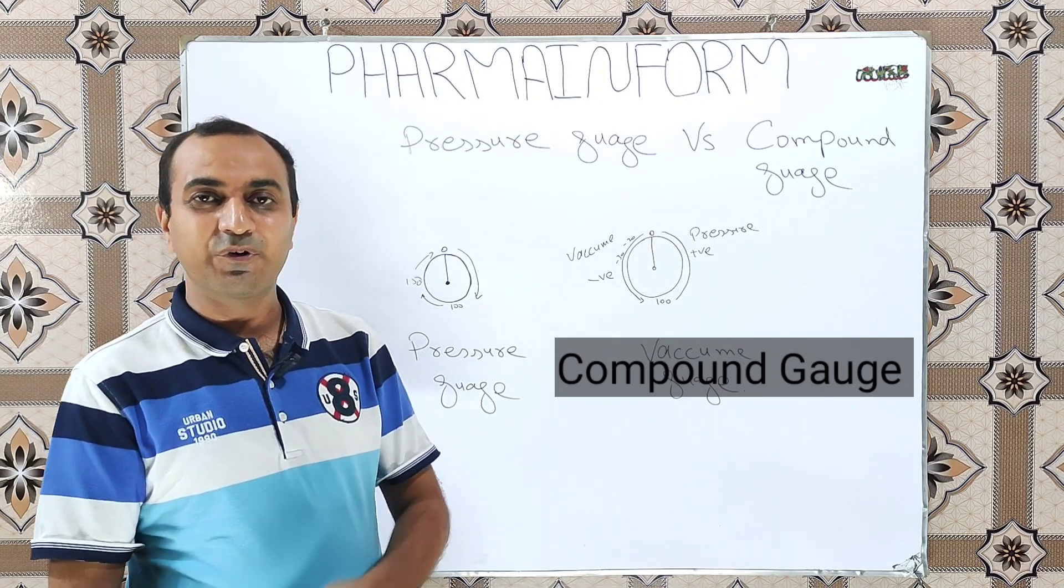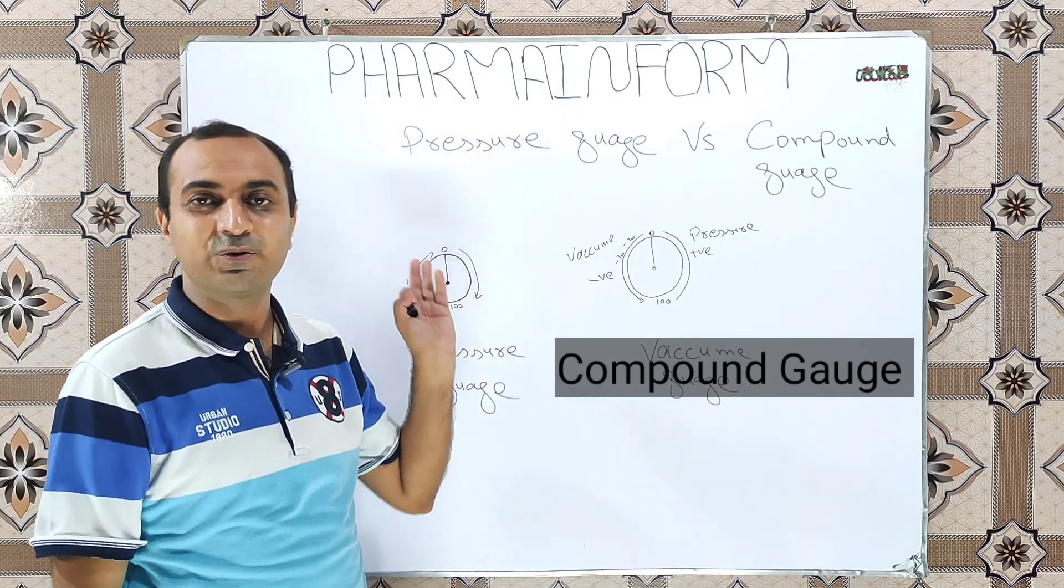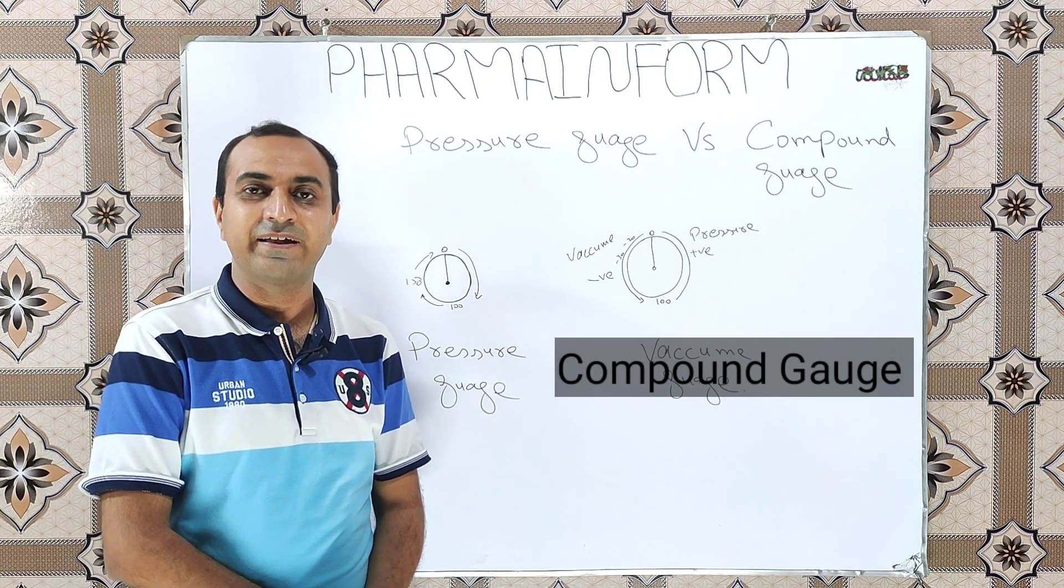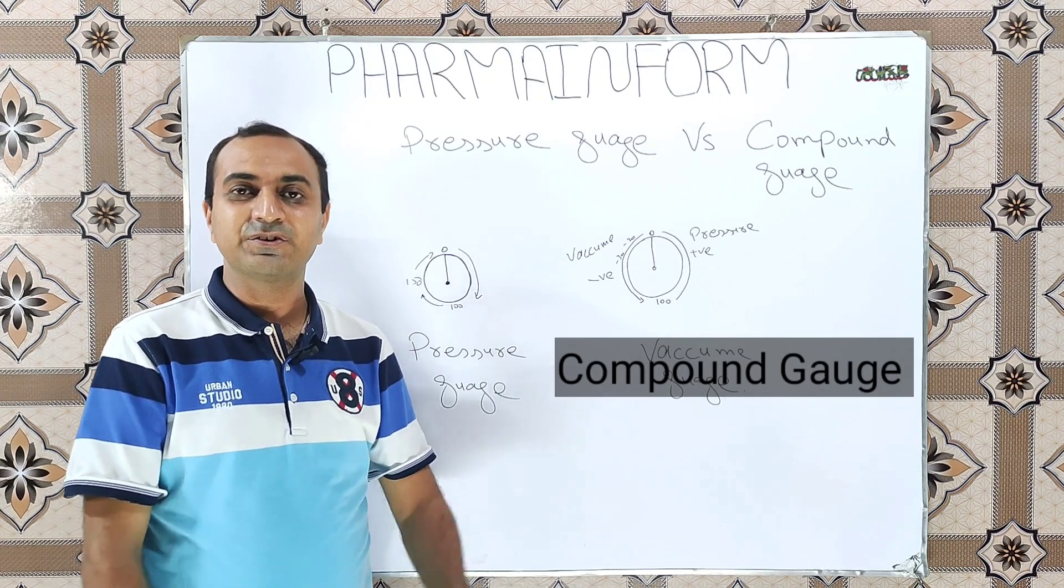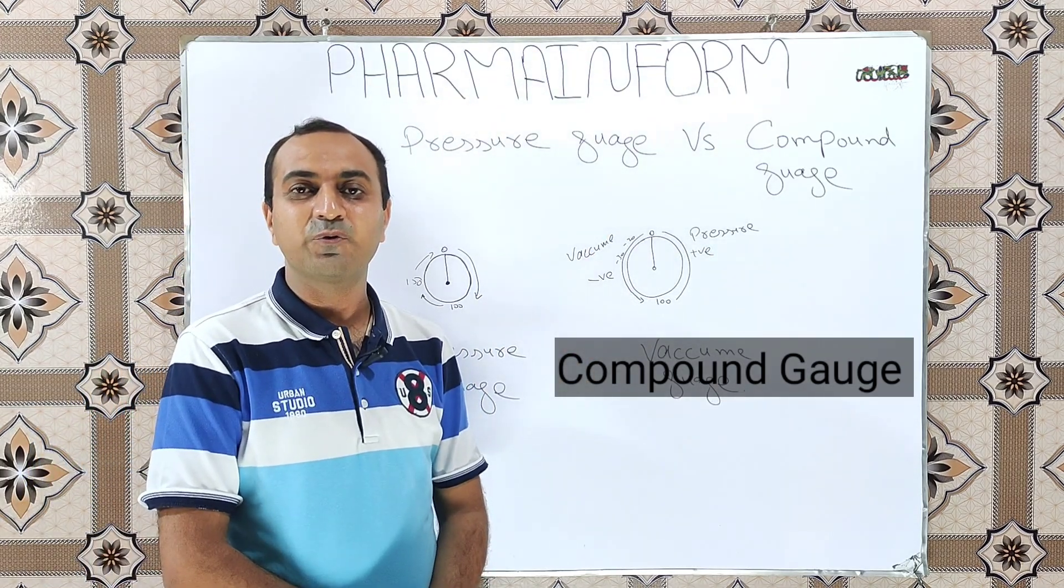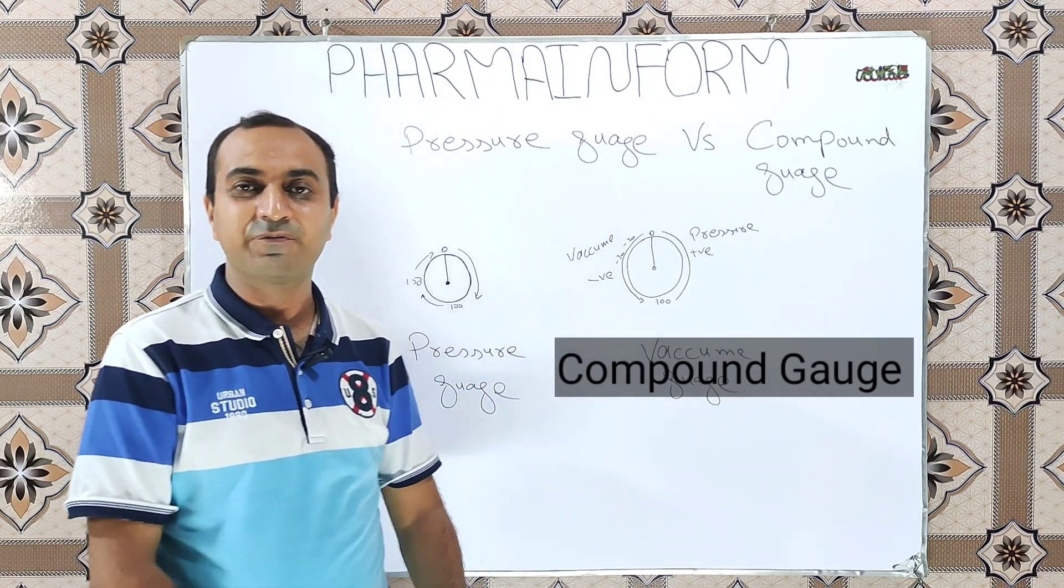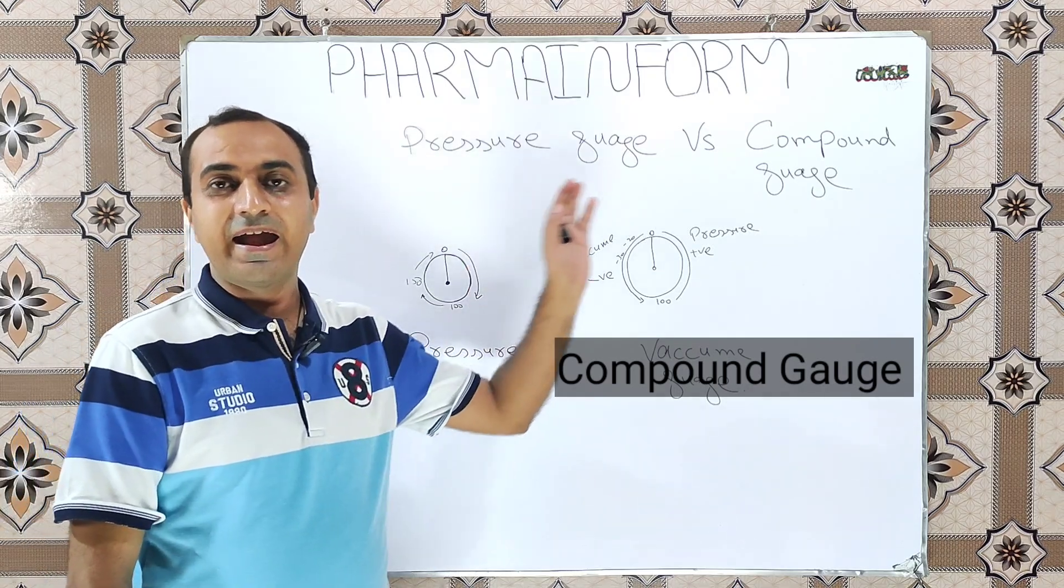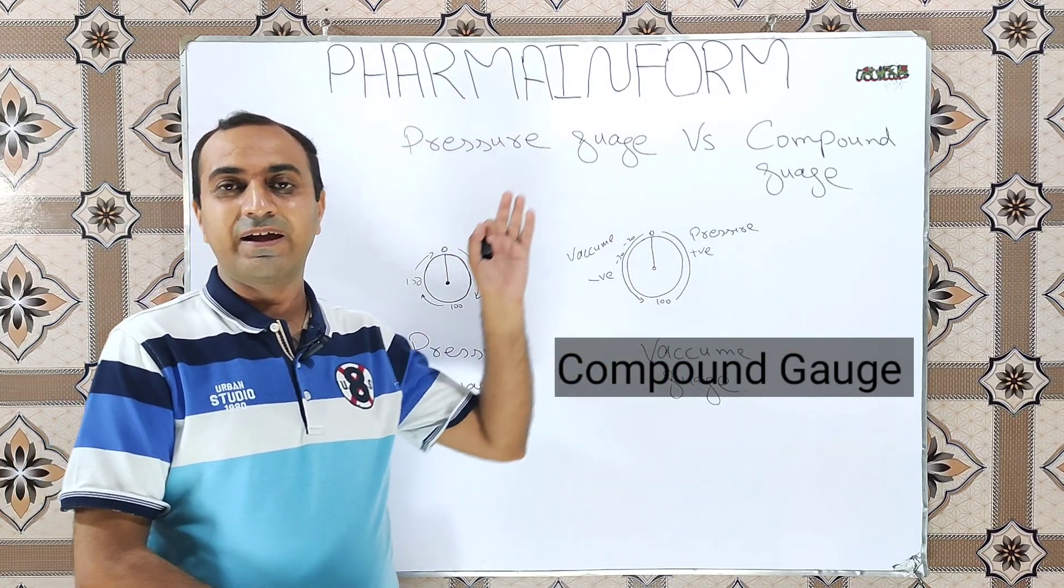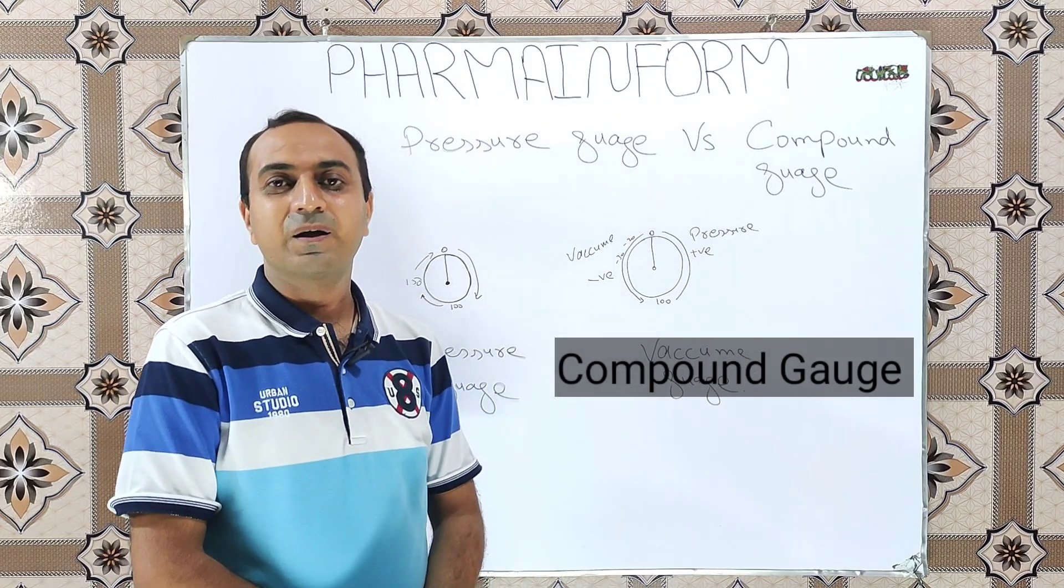Gauges are of great importance in pharmaceutical industries and you have seen different types of gauges installed on various machines and equipment. These gauges may be pressure gauges and compound gauges. Many of you are not aware about the difference between the pressure gauge and the compound gauge, meaning when the pressure gauge is used and what is the purpose of the compound gauge.